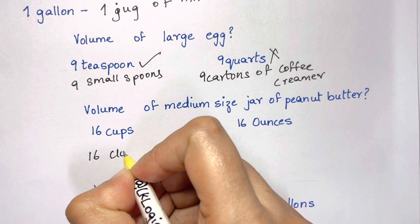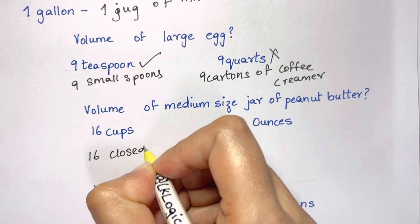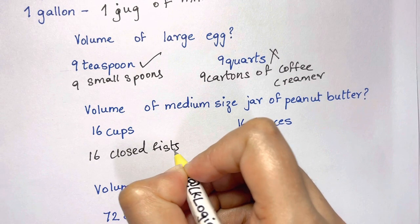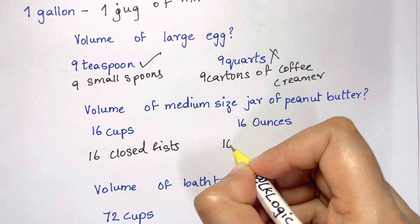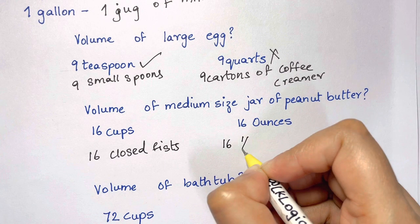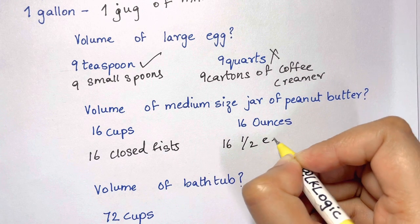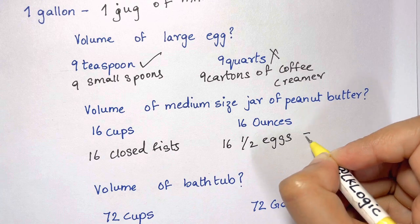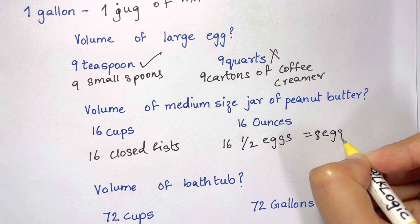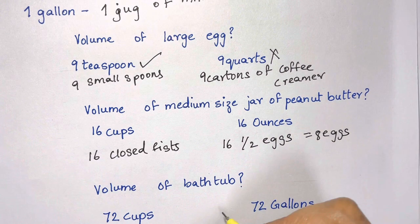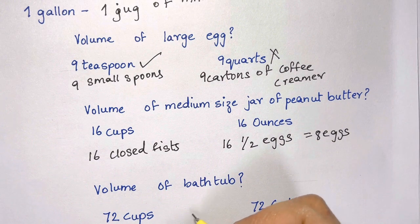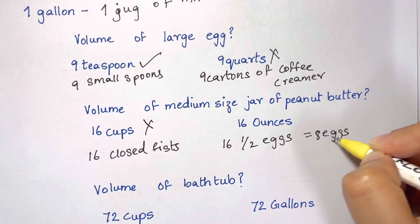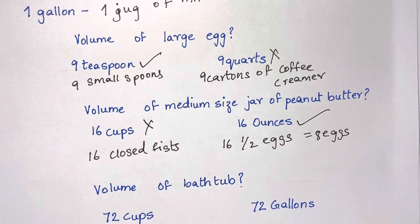What is the volume of a medium-sized jar of peanut butter — 16 cups or 16 ounces? Sixteen cups would be 16 closed fists, and 16 ounces is about 16 half-eggs, which is the equivalent of eight eggs total. The better estimate is 16 ounces.